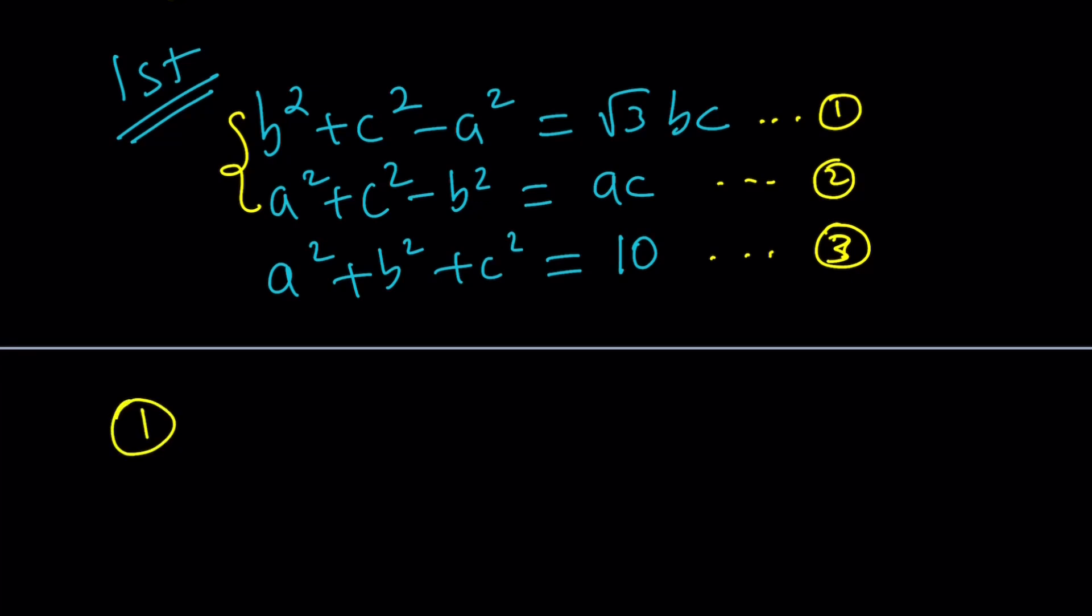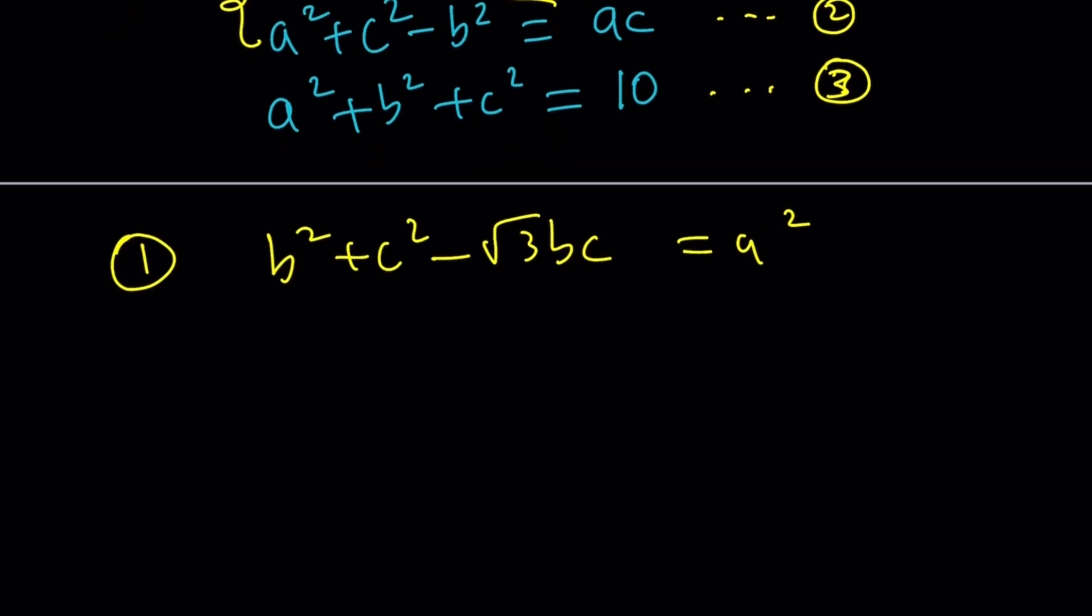I'm going to go ahead and start with the first. I want to isolate the a². How do I isolate a²? I put it on this side and then bring the bc over. So it's going to look like this: b² + c² - √3bc = a². Of course, you want to have the a² on the left hand side, but I didn't want to do too many manipulations. We can always switch sides around.